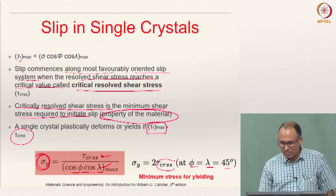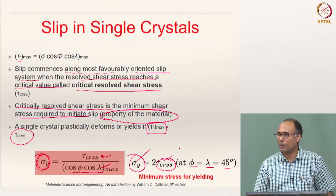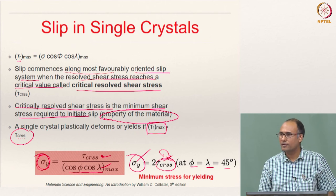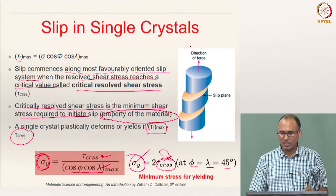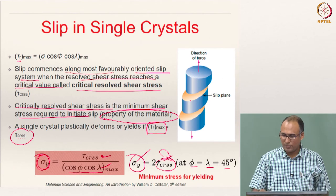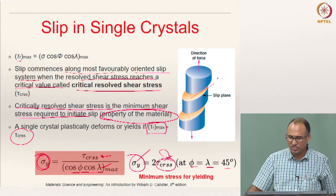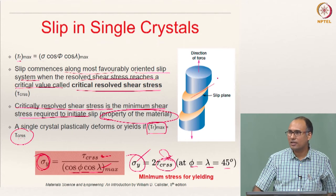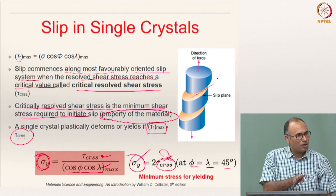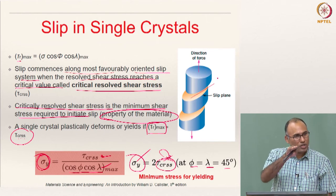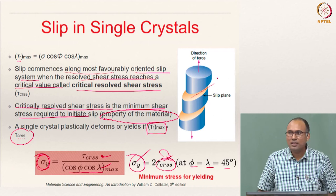You can use either yield strength or CRSS as your material property; there is a correlation between the two. Since we are applying normal stress but slip is driven by the resolved shear component, when you apply a load along the axis of a cylindrical specimen, slip tends to happen at 45 degrees. In a zinc single crystal, you can see slip bands clearly on the surface — these are steps created when dislocations exit the crystal.